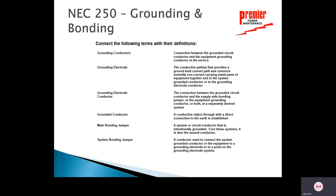Looking at the terms on the left, we need to match those up with the items on the right. For grounding conductors — what is a grounding conductor? Looking at the options, that's the conductive path that provides a ground fault current path and connects normally non-current-carrying metal parts of equipment together and to the system ground conductor or the grounding electrode conductor. Basically, it's the green wire that attaches every electrical box, every electrical compartment, and any metal casing, connecting it back to earth ground at the source.